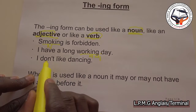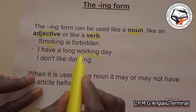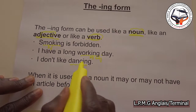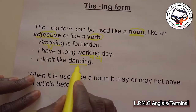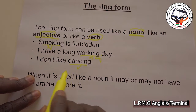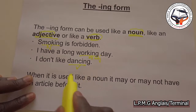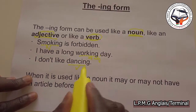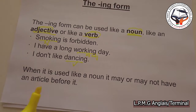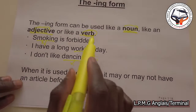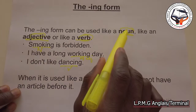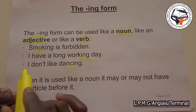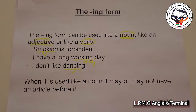And the last example: 'I don't like dancing.' Dancing here is a verb. So let us recap what I just said. We use the ING form with the noun — 'Smoking is forbidden'; with the adjective — 'I have a long working day'; and with the verb — 'I don't like dancing.'